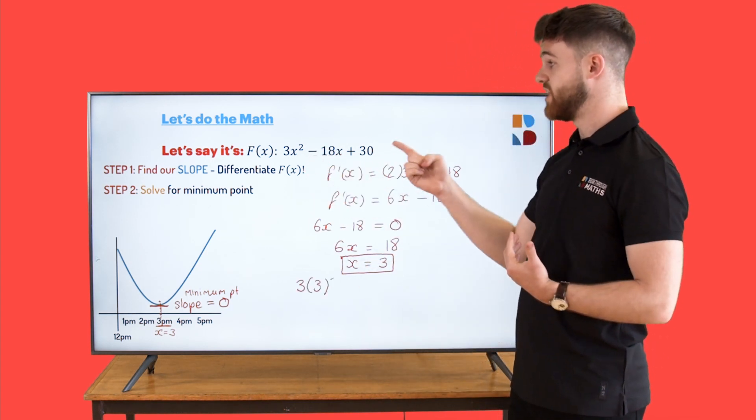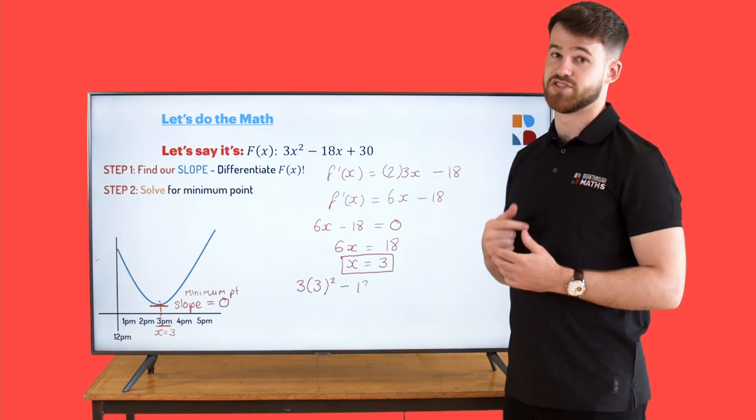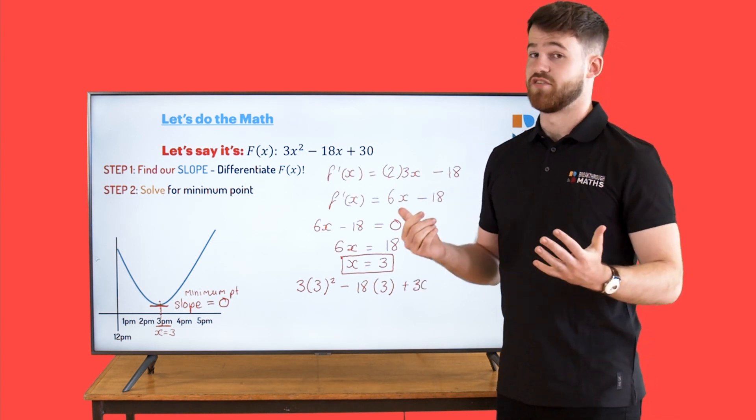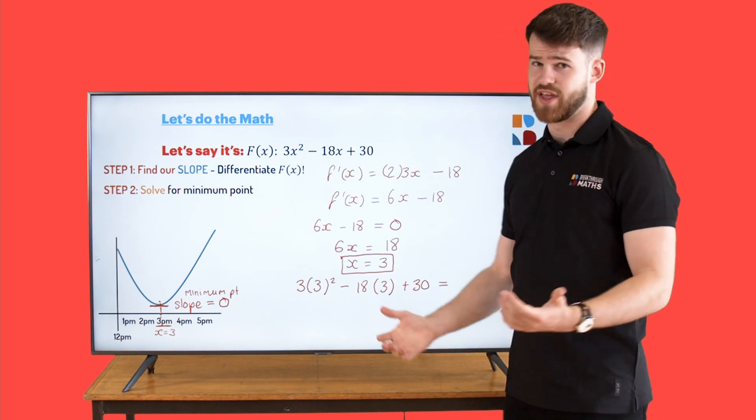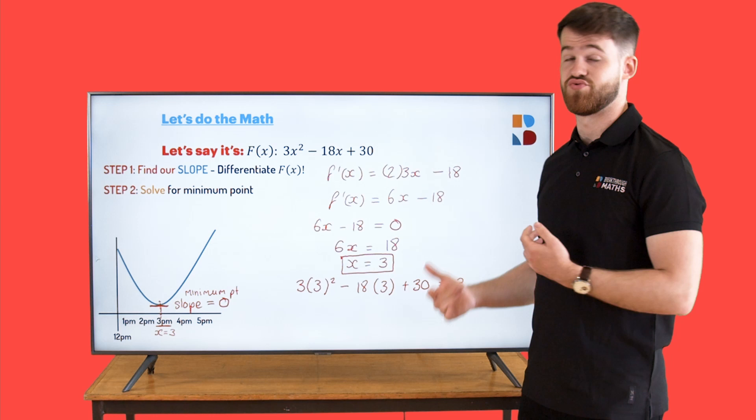So we're going to have 3 times 3² minus 18 times 3 plus 30. And we want to figure out what that is. You can just pop that into your calculator. When you do that, you'll see that GameStop's price at 3pm was €3.